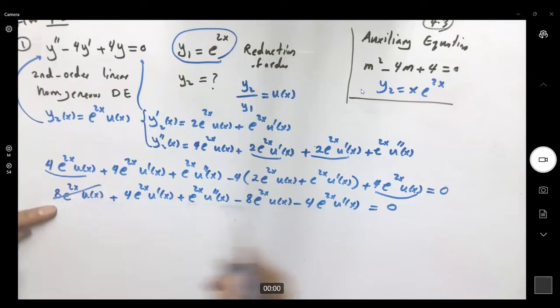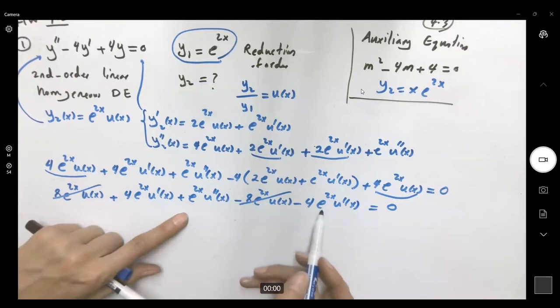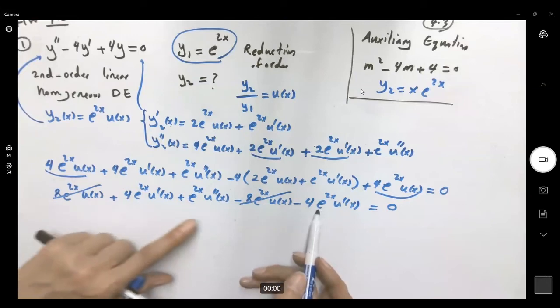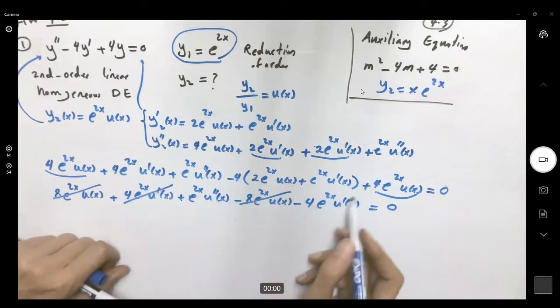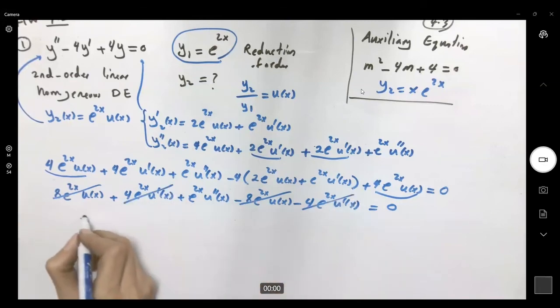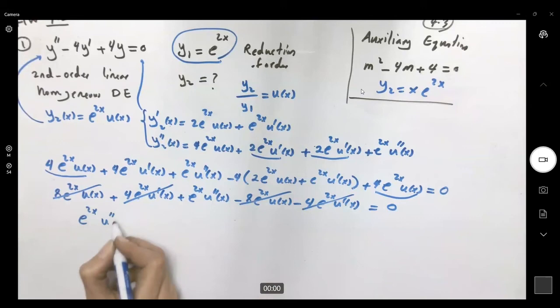We have 8 e to 2x ux negative 8 e to 2x ux. Here you can also cancel 4 e to 2x u prime and 4 e to 2x u prime. What's left? e to 2x u double prime of x equal to 0.